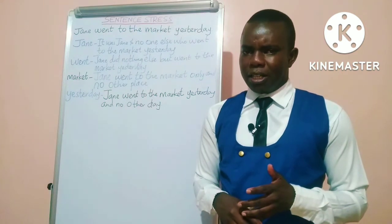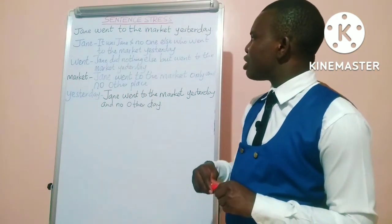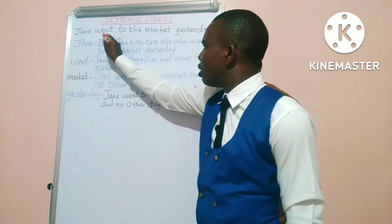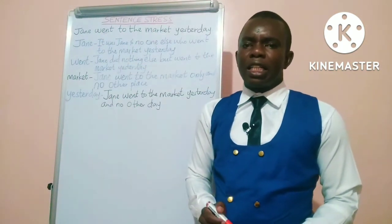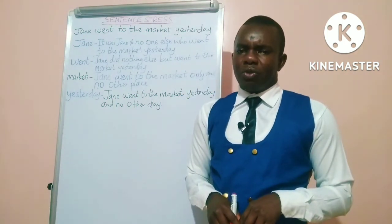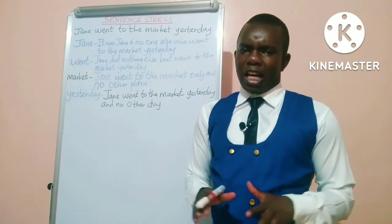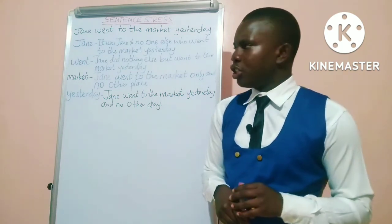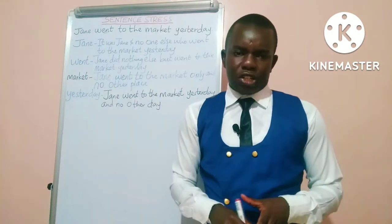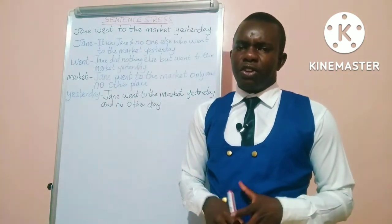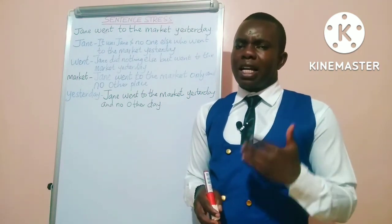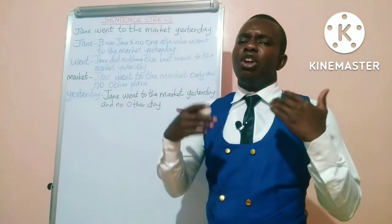When stress falls on the verb 'went,' the sentence will mean that Jane only went to the market and did nothing else — so the stress is on the action. When the stress is on 'market,' then the sentence will mean that Jane went only to the market and no other place, emphasizing the place where Jane went.